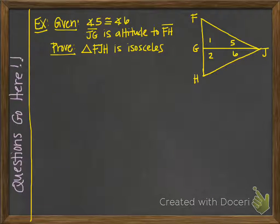Let's try a proof using these concepts. Here are some givens and a picture. We are trying to prove that the larger triangle FJH is isosceles, which means we either need to show that two of its sides have the same length or that two of its angles have the same measure. We know that angle 5 and angle 6 are congruent, and that GJ is the altitude to FH. An altitude always means we have perpendicular lines, so we have some right angles.